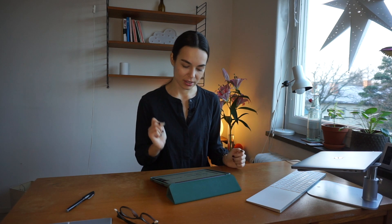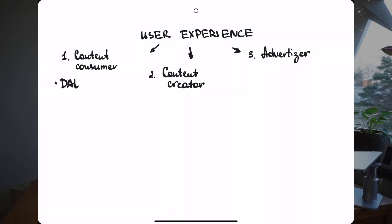The easiest one to start with is the content consumer. The goal is to keep the content consumer on the platform — to retain them. Companies like Google with YouTube or Instagram look at overall volumes of users, so here we go with daily active users, monthly active users, and less commonly weekly active users. The definition of 'activity' depends on the use case — it could be just logging in, or starting a video and watching it for at least five seconds. You should be able to reason around why certain activity counts as user activity.